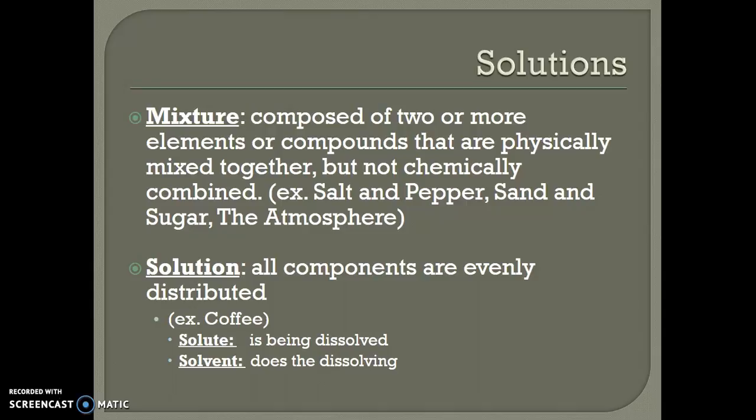A very special type of mixture that we'll be using in this class is a solution. With a solution, everything that's mixed in is evenly distributed, so it looks the same all the way throughout. For example, if you put sugar in your coffee, sugar is a solution of the coffee, the water, the sugar, and maybe even some milk. But when you stir it up, it looks the same color all the way throughout. There's two important parts to a solution: the solute and the solvent. The solute is the part that is being dissolved. The solvent does the dissolving. So if you're making sugar water, the sugar is the solute and the water is the solvent. In biology, the solvent is almost always water.